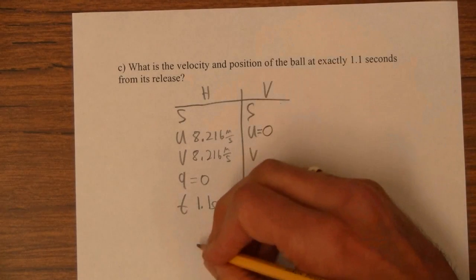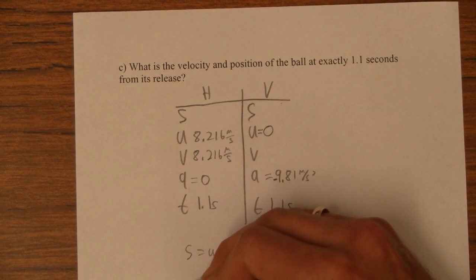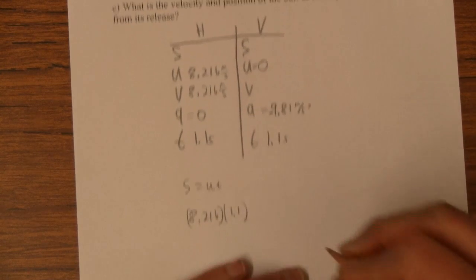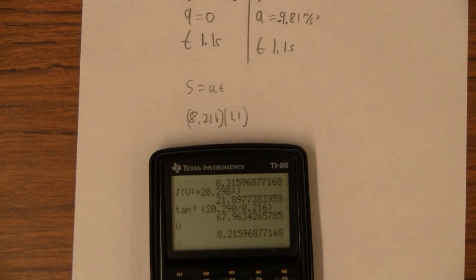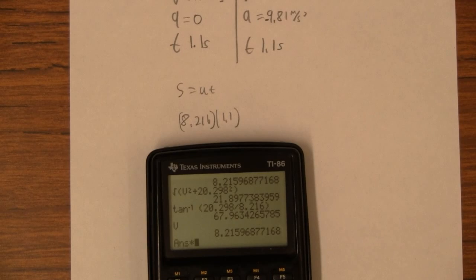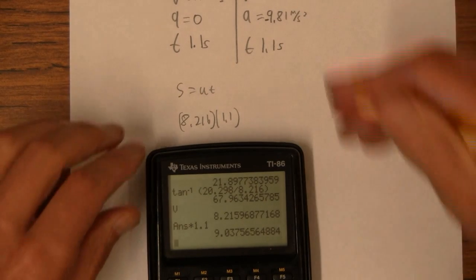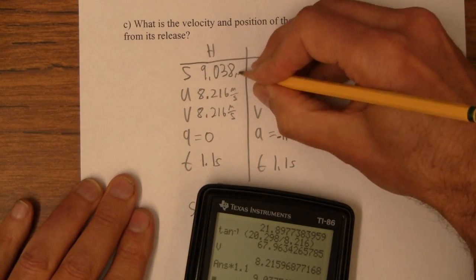Well, this is easy. The only thing we ever do horizontally is S is UT, right? So 8.216 times 1.1. I stored that thing in here somewhere, there it is. So I've actually stored that, so I'm going to go that times 1.1, and I'm getting 9.038.